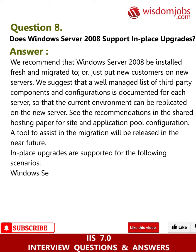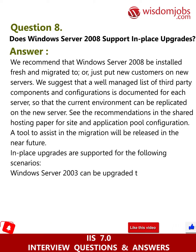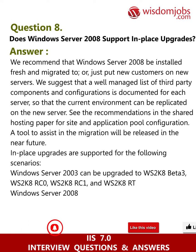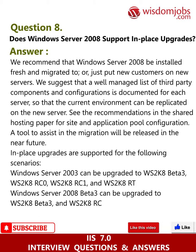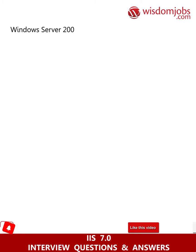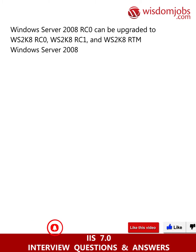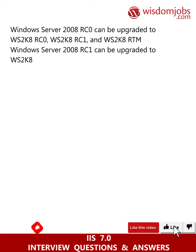A tool to assist in the migration will be released in the near future. In-place upgrades are supported for the following scenarios: Windows Server 2003 can be upgraded to WS2K8 Beta 3, WS2K8 RC0, WS2K8 RC1, and WS2K8 RC2. Windows Server 2008 Beta 3 can be upgraded to WS2K8 RC0. Windows Server 2008 RC0 can be upgraded to WS2K8 RC0, WS2K8 RC1, and WS2K8 RTM. Windows Server 2008 RC1 can be upgraded to WS2K8 RC1 and WS2K8 RTM.